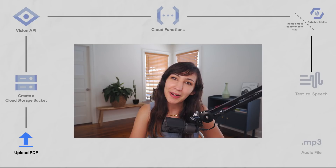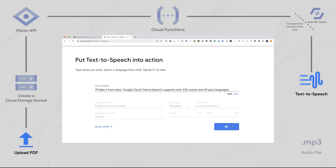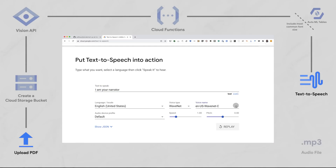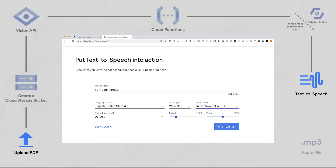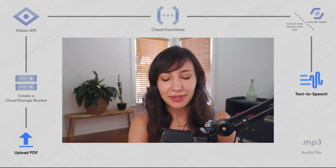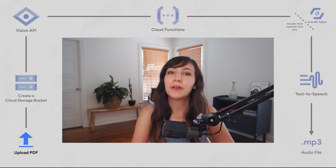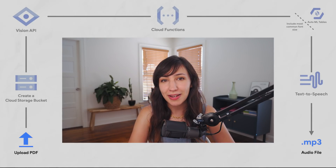And now for the fun part — generating computer voices. Google Cloud Text-to-Speech supports over 220 voices in 40-plus languages. After sampling a few voices saying 'I am your narrator,' I picked my favorite. Now that I've chosen my favorite voice, I can update the code so that when I upload a PDF, an audiobook will automatically be generated. Let's take a look at what it sounds like.